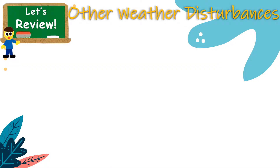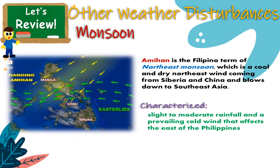Let us have a simple review about monsoon, which was our first session last time. Monsoon in the Philippines has two main types. First is the Amihan, also called the Northeast monsoon, which is a cool and dry northeast wind coming from Siberia and China, blowing down to Southeast Asia. It is characterized by slight to moderate rainfall and prevailing winds that affect the east of the Philippines.